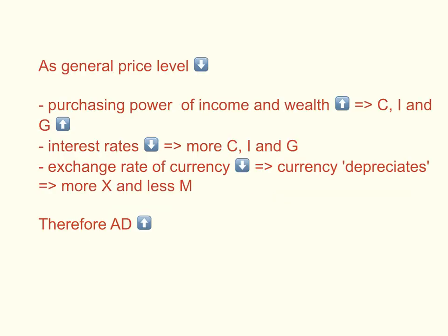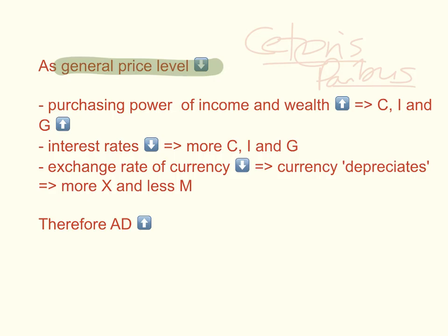So what happens when the general price level falls? Ceteris paribus — other things held constant, which is a very important assumption when analyzing aggregate demand and aggregate supply — as the general price level falls, the purchasing power of consumers' income and wealth will increase. Consumers have the same income but can now buy more because the general price level has fallen. So consumption spending, investment spending, and government spending will all increase.